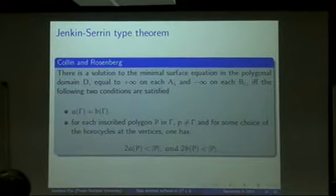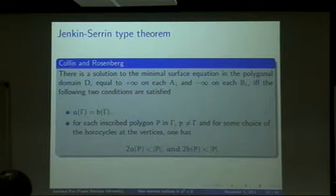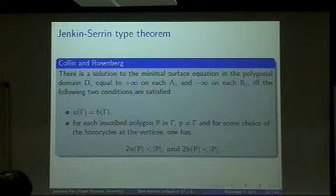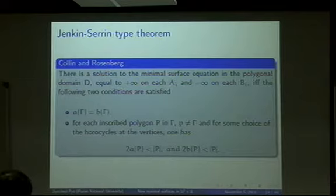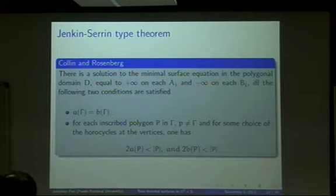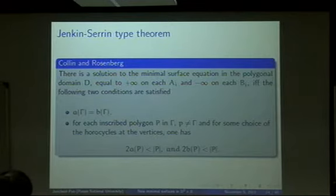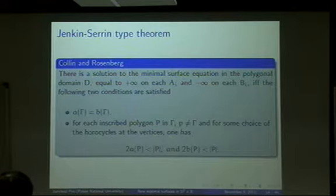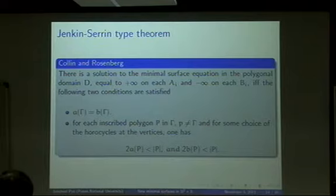This theorem is called the Jenkins-Serrin type theorem. By Collin and Rosenberg, there exists a solution of the minimal surface equation in a polygonal domain D, where a_Γ = a₊∞ and b_Γ = b₋∞, and for every inscribed polygon P in Γ these two conditions hold, so we can find a function u satisfying the minimal surface equation. This is the Jenkins-Serrin inequality.